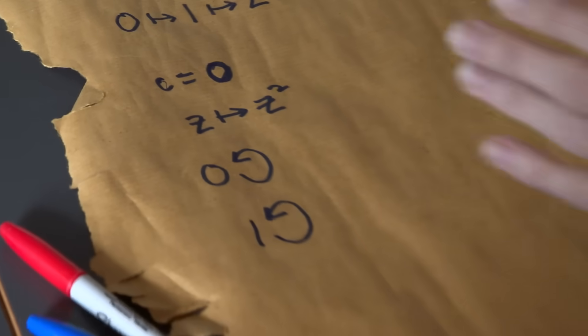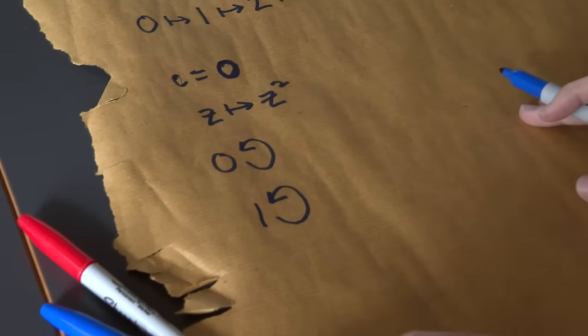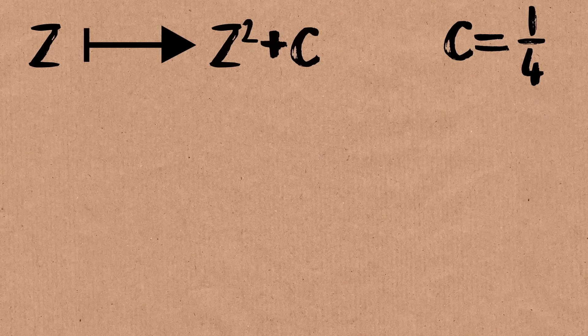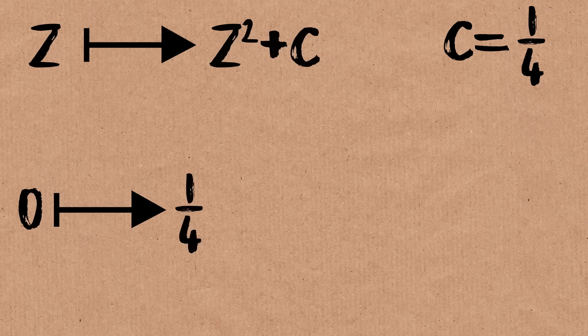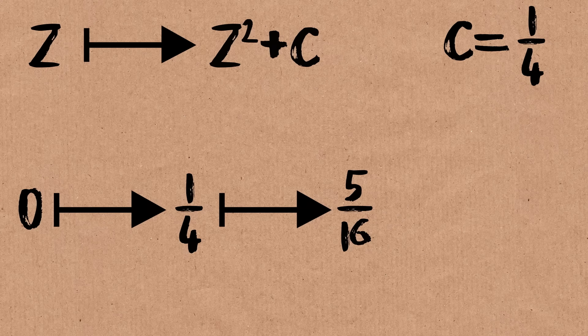Okay, so the first thing to point out is that it can happen with fractions. So let's say c is equal to 1 quarter. Now, if I start with 0, what happens is, well, I get 0 squared plus 1 quarter. 1 quarter squared, which is 1 over 16, plus 1 quarter, which I guess is 5 over 16.